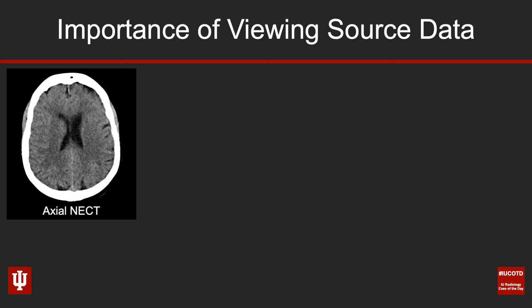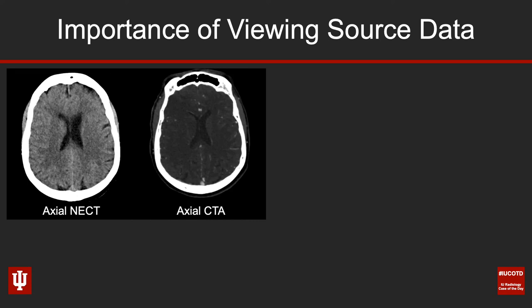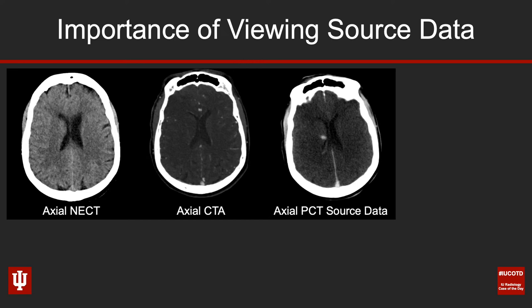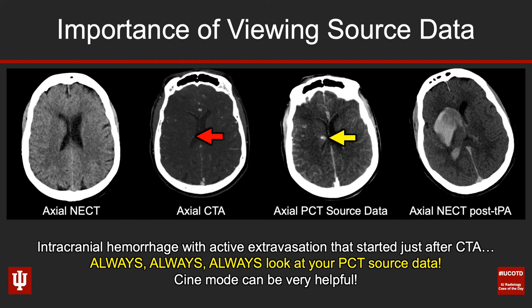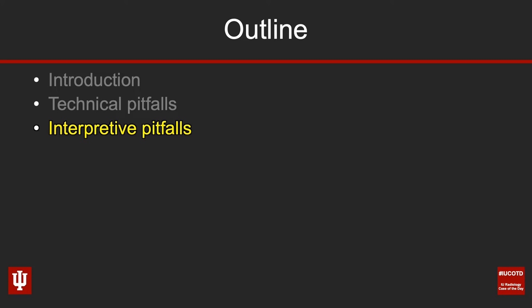Here's a case driving home why it's important to look at the source data — this was the very first stroke one brain attack I looked at as a fellow. On the non-contrast CT nothing is too impressive, and on the CTA on first glance also not very impressive. But on the perfusion CT, there's a little hypoattenuation in the right frontal operculum — an area of ischemia — and importantly, we have increasing density at the tip of the yellow arrow, and perhaps on the CTA at the red arrow. This patient had received TPA at an outside hospital and had rapid hemorrhagic transformation of their infarction. What we're seeing is active extravasation and bleeding on the table during perfusion CT. So always look at the perfusion CT source data — looking at it in CINE mode is quite an easy way to do that.